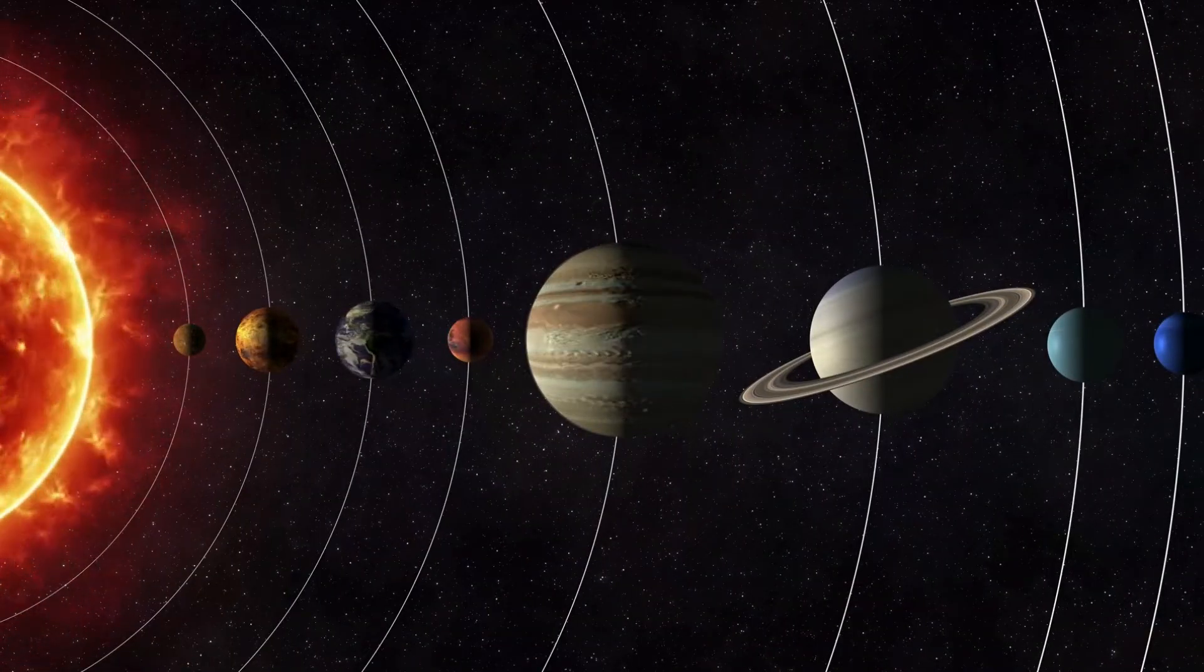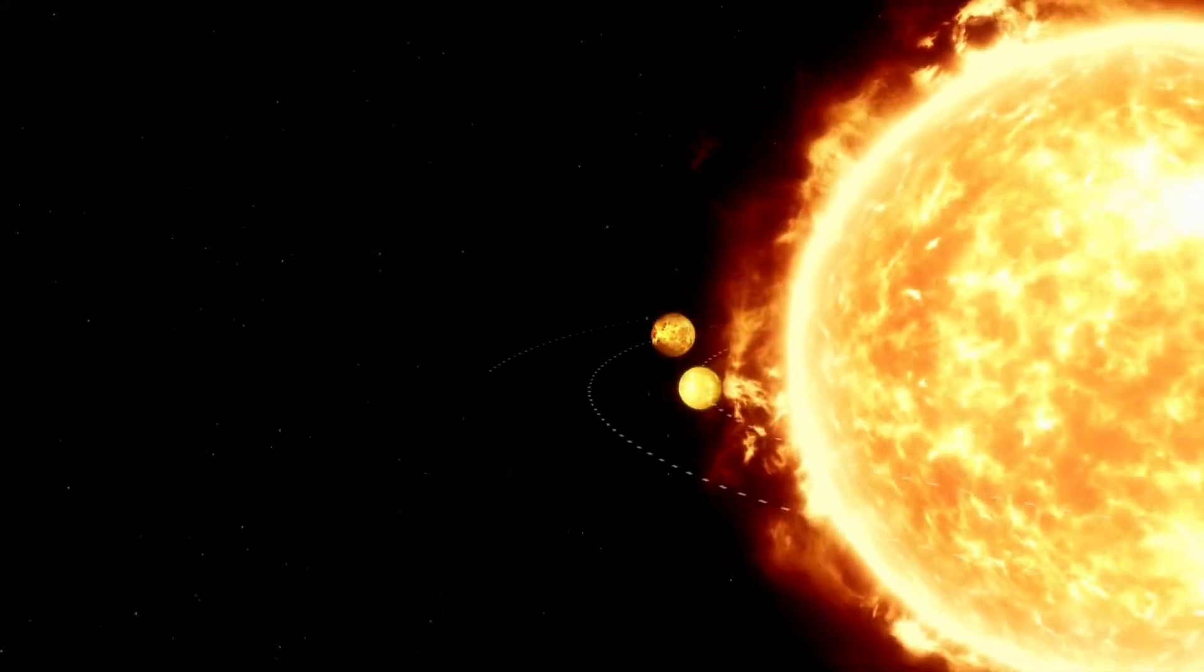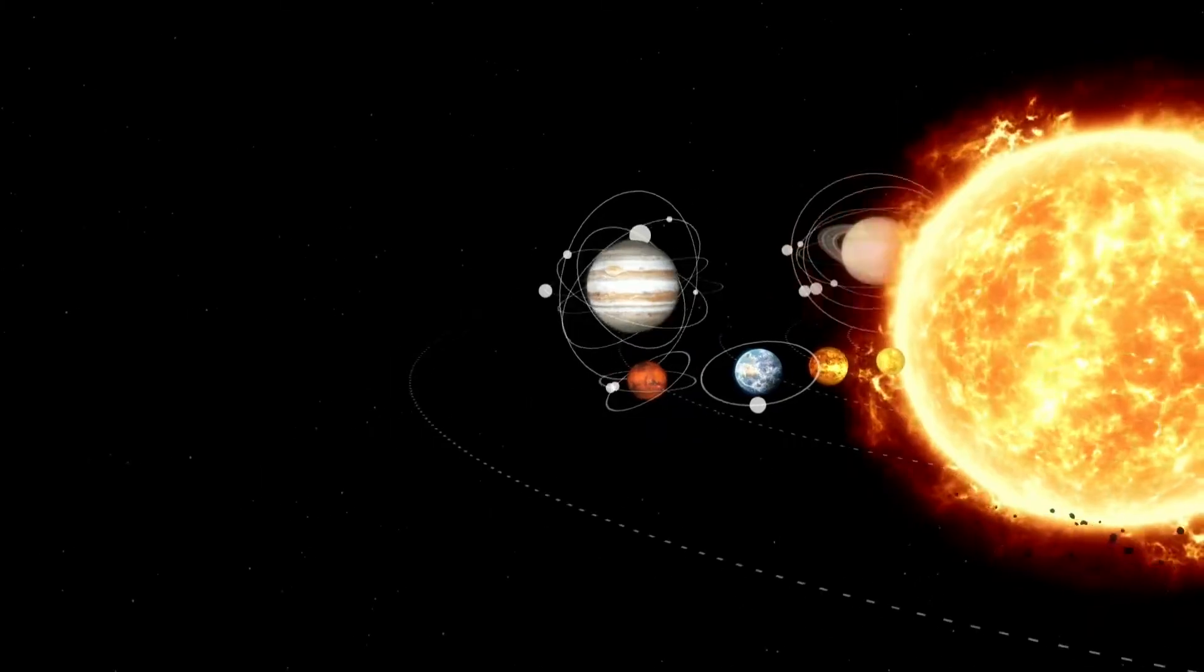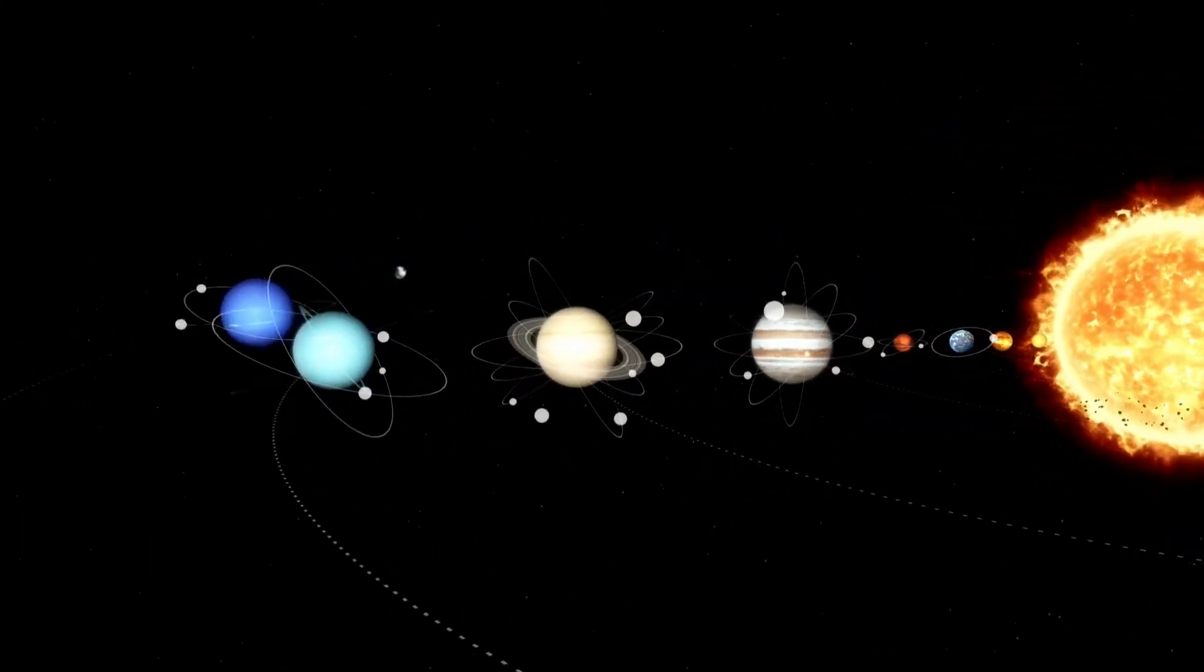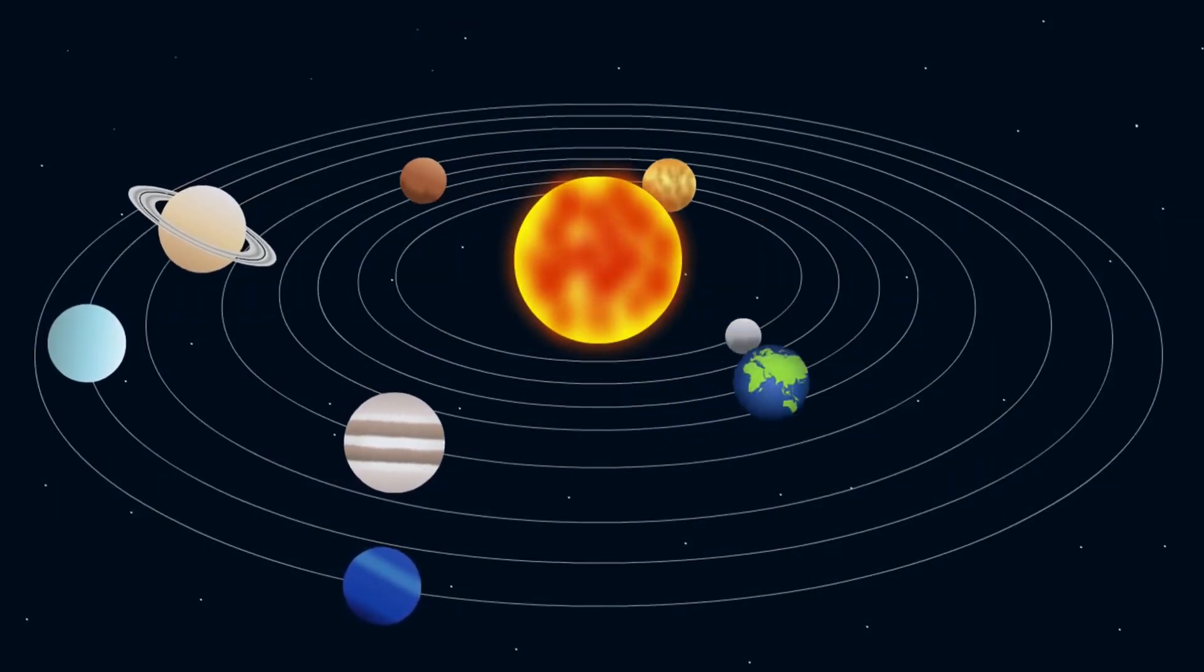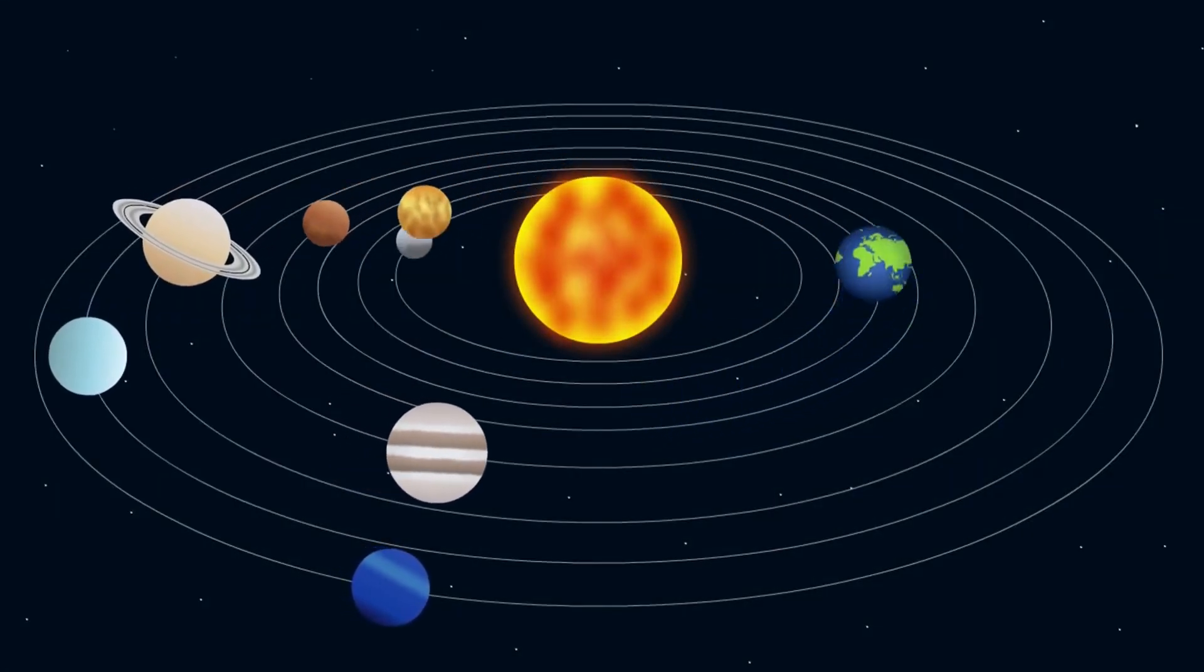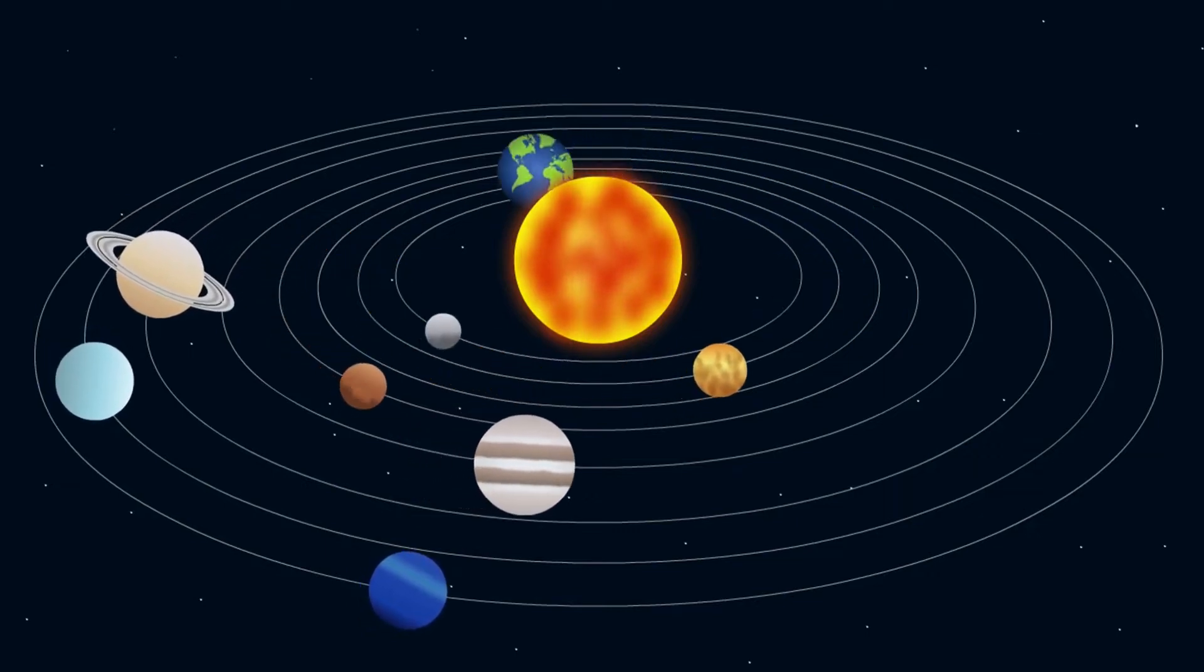This happens for two main reasons. If a planet is close to the sun, the distance it orbits around the sun is fairly short. This distance is called an orbital path. The closer a planet travels to the sun, the more the sun's gravity can pull on the planet. The stronger the pull of the sun's gravity, the faster the planet orbits.